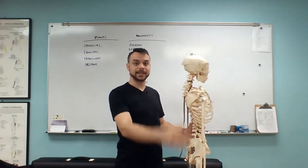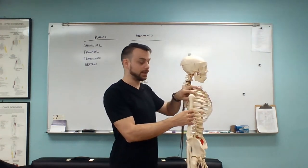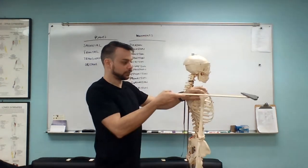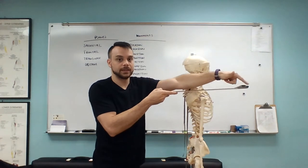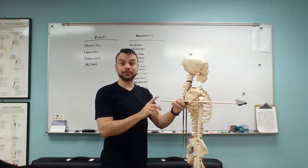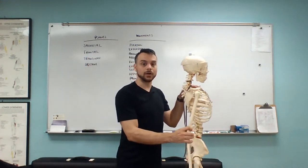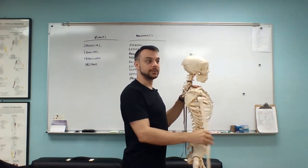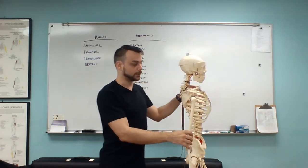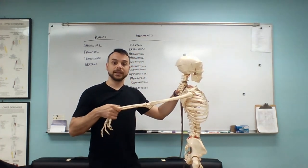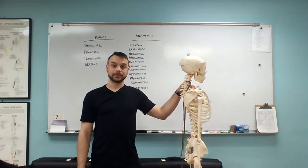By definition, flexion is a decrease in an angle and extension is an increase in an angle. If we take Mr. Bones and consider a straight 180-degree plane — zero on one end, 180 on the other — our arm hanging down makes a 90-degree angle. If we take our arm from 90 degrees toward zero, we're decreasing the angle and we're flexing. If we go from 90 degrees toward 180, we're increasing the angle and we're extending.